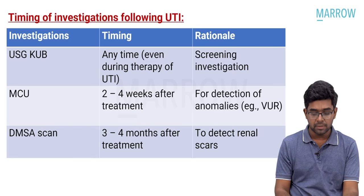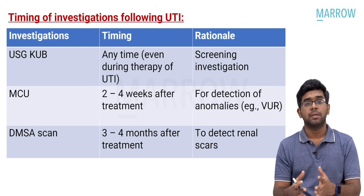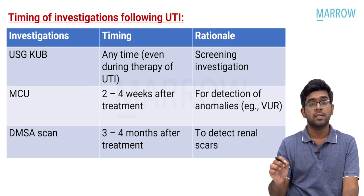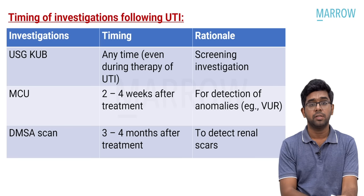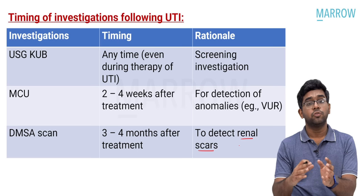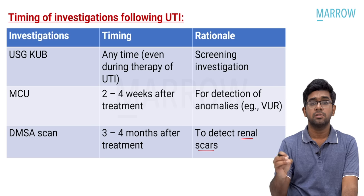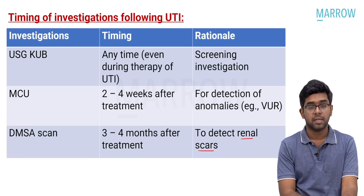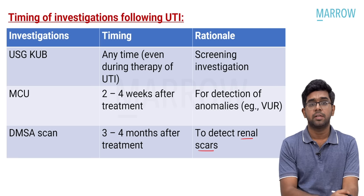Guidelines on timing of investigations following UTI: Ultrasound KUB can be done at any time, even during treatment. MCU is usually done two to four weeks after treatment — you don't want to catheterize and administer contrast while the child is being treated. DMSA scan is done to detect renal scars, typically three to four months after treatment, because healing lesions from UTI itself can mimic renal scars — postponing overcomes this diagnostic uncertainty.